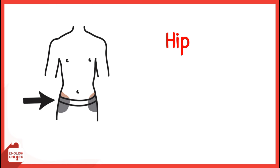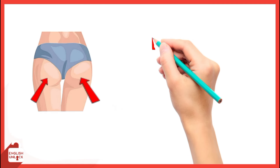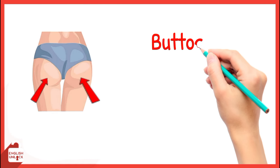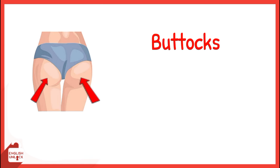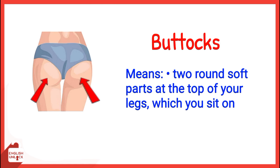Hip means the part of the side of the human body above the legs and below the waist. Buttocks means two round soft parts at the top of your legs which you sit on.